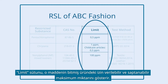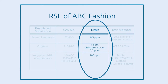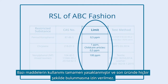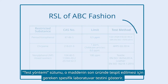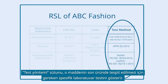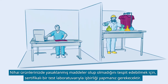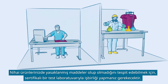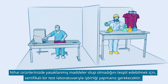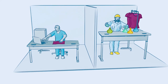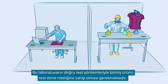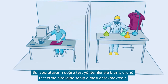The limit column shows the maximum allowable and detectable amount of that substance in the finished product. Some substances are completely banned and not allowed to be found in the end product at all. The column Test Method indicates the specific laboratory test required for detecting that substance. To detect whether there are restricted substances in your final products, you will need to collaborate with a certified testing laboratory qualified to test the finished product with the correct test methods.